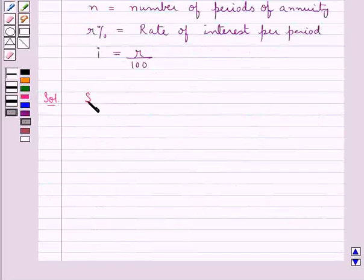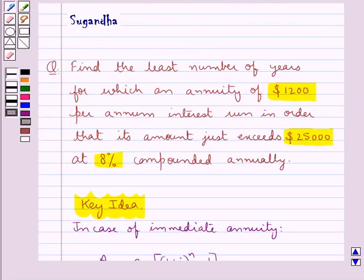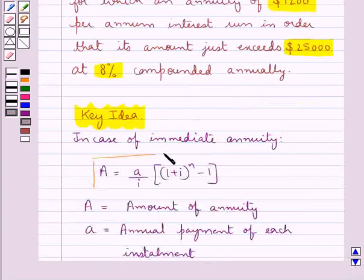First of all, we suppose that the annuity runs for N years and so we are supposed to find N. As the payment would be made at the end of each period, this is the case of immediate annuity and so we will use this formula.